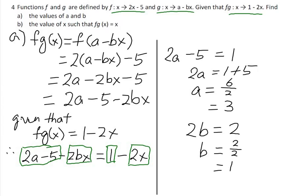Therefore the value of a is 3 and the value of b is 1. Now let's go to part b: find the value of x such that fg(x) equals x.